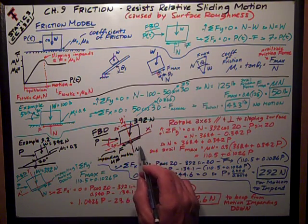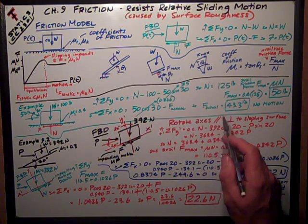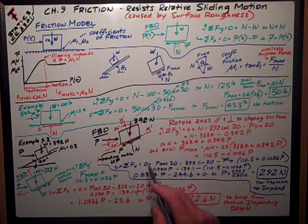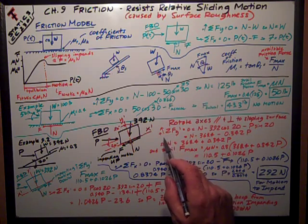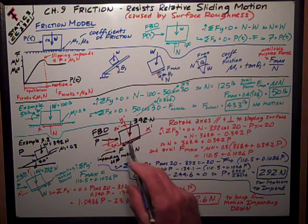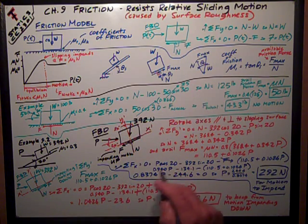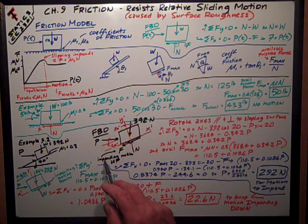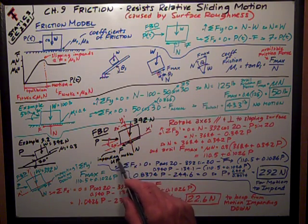The key thing with a lot of these friction problems is to rotate your axes so that they are parallel and perpendicular to the sloping surface. That makes the math a lot easier to write out in the sum of forces equations and a lot easier to visualize. So here are my rotated axes, 20 degrees from the horizontal and the vertical. I call y-prime the one that's up and to the left, and this is x-prime.